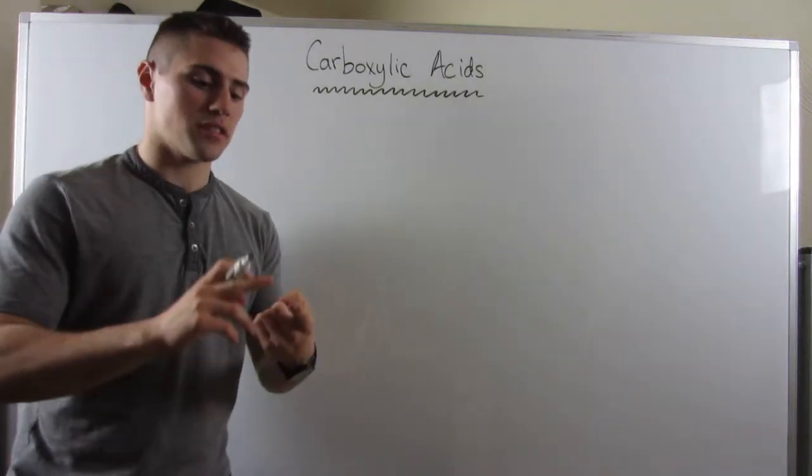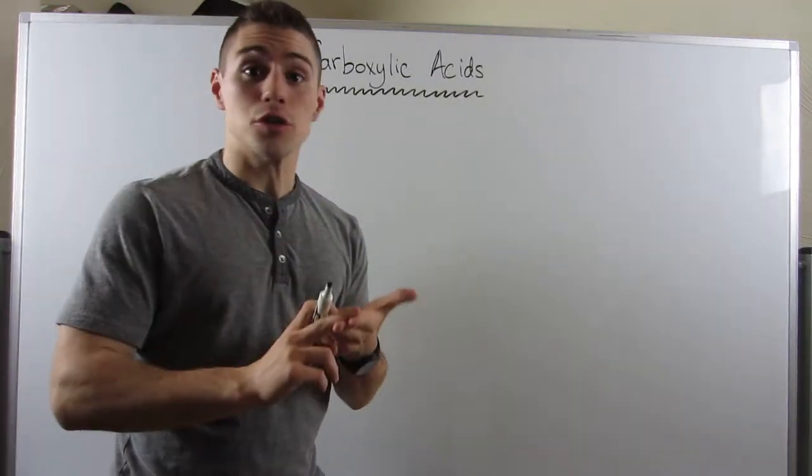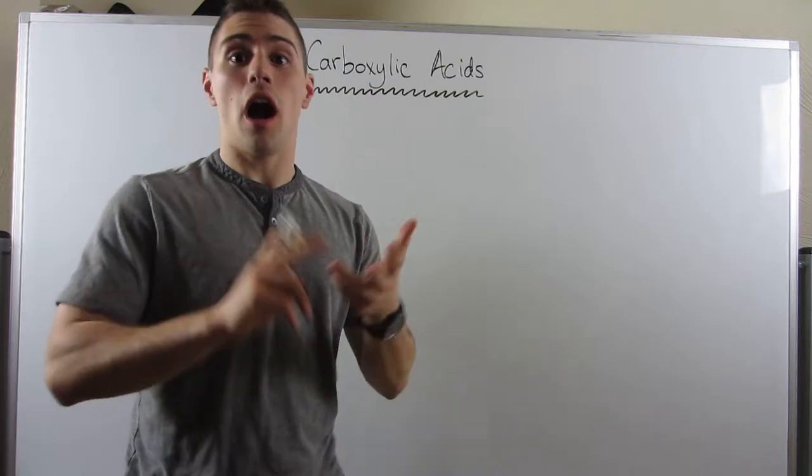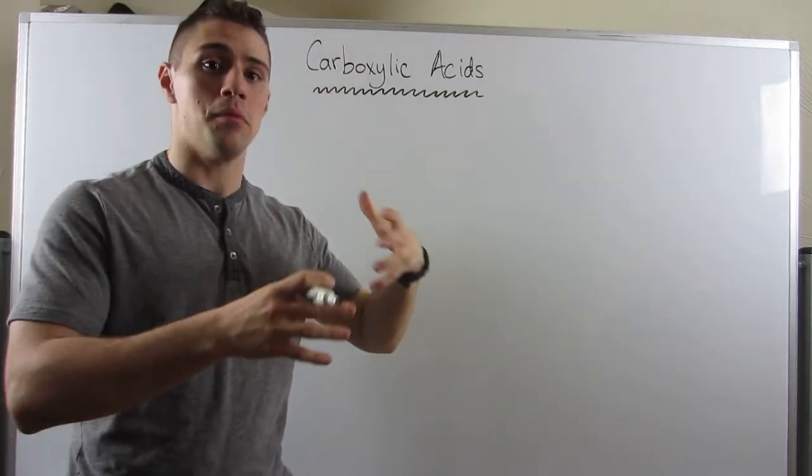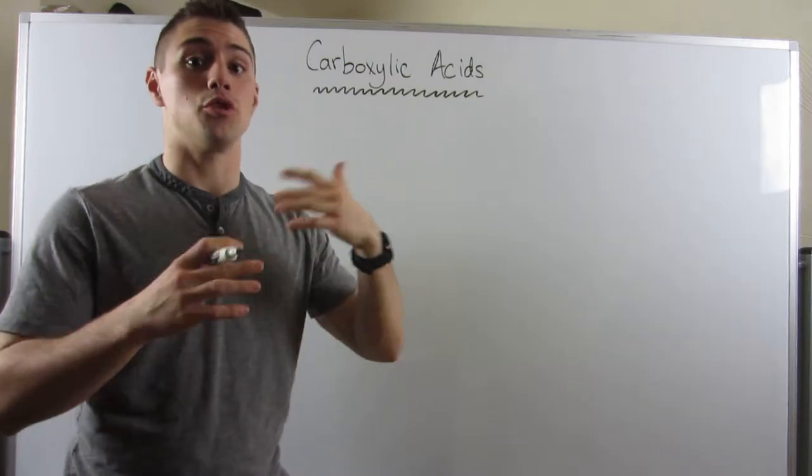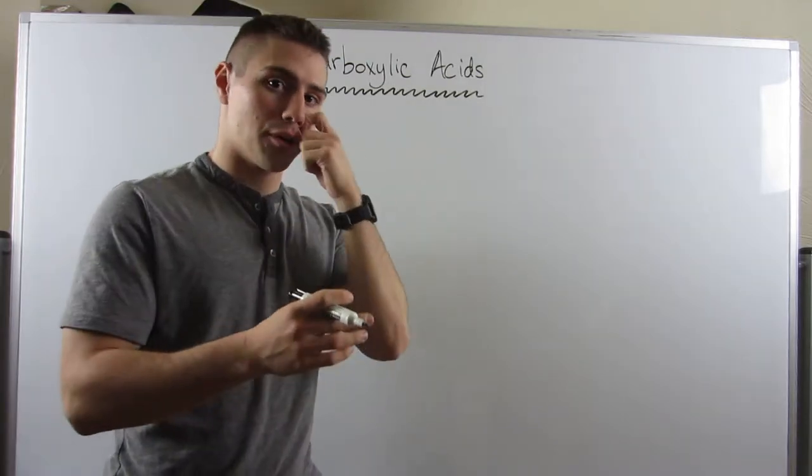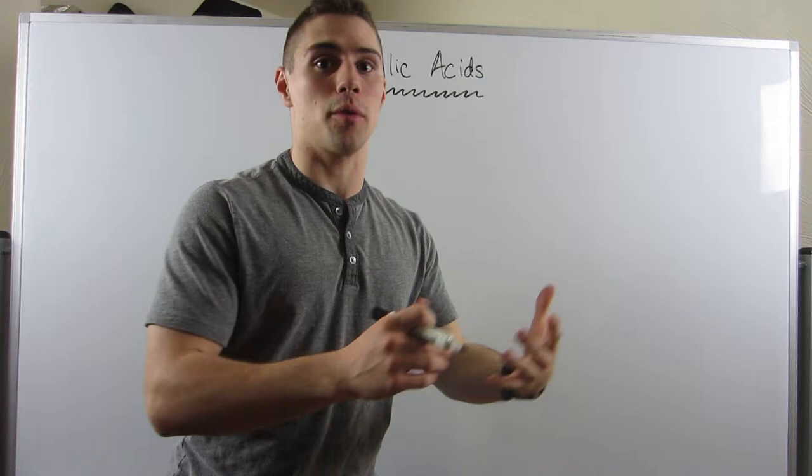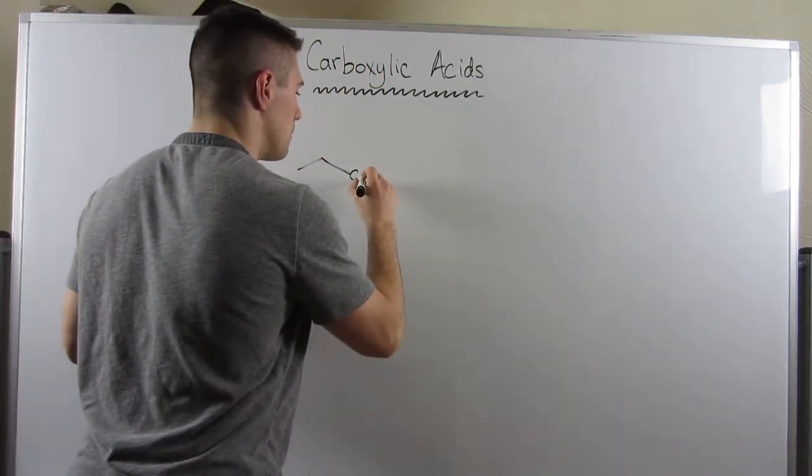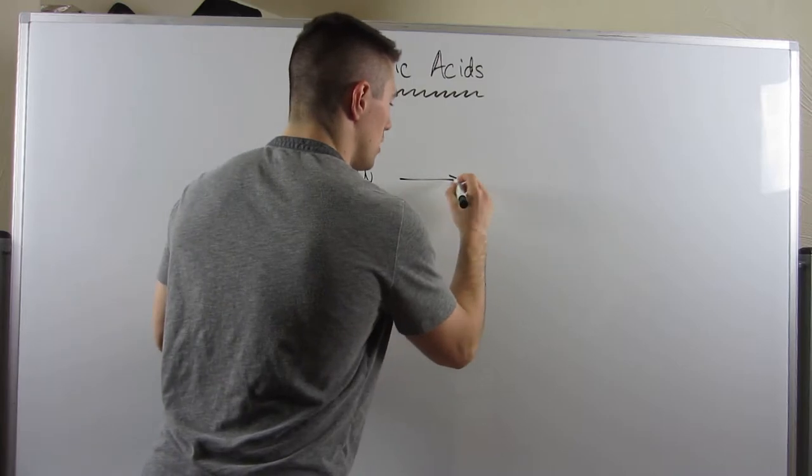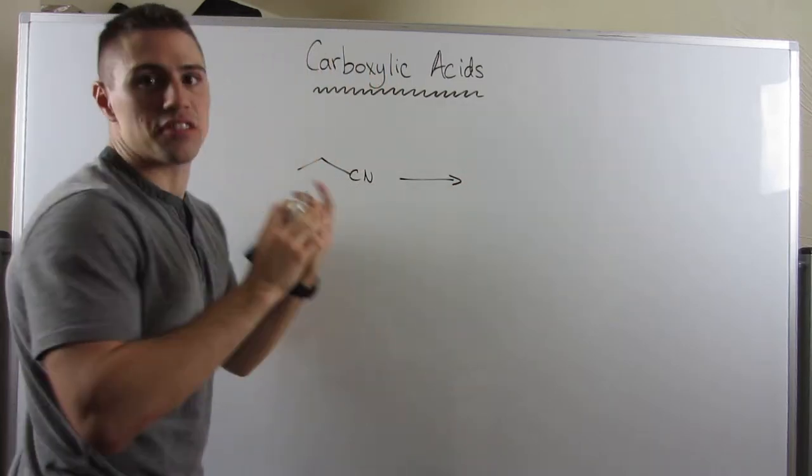Okay gang, now that we've looked at physical properties, the structure of carboxylic acids, oxidation reduction, and recently how to produce them using a Grignard reaction to attack CO2, I want to show you another way to produce carboxylic acids. I'm going to throw up a reaction, explain it, draw the mechanism, and then summarize it.